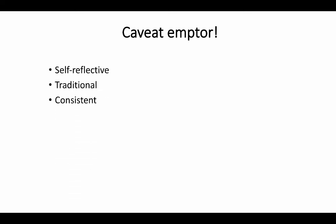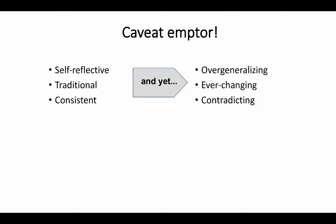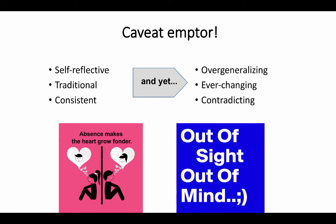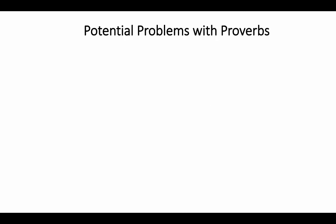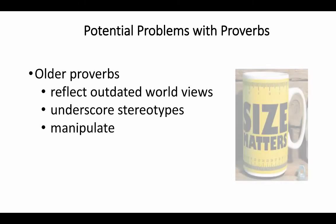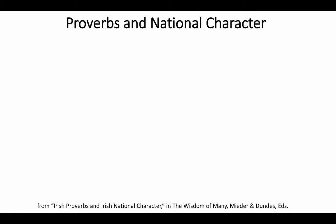There's a lot we can learn about a culture from its proverbs—but caveat emptor (hey, that's a proverb!). At the same time that proverbs are self-reflective, traditional, and consistent, they're also overgeneralizing, ever-changing, and contradicting. For example, 'Absence makes the heart grow fonder' contrasts with 'Out of sight, out of mind.' So proverbs often contradict each other—and even that says something about a culture. Older proverbs can also reflect outdated worldviews, underscore stereotypes, or manipulate. We should learn a lot from proverbs while also avoiding overgeneralizing.